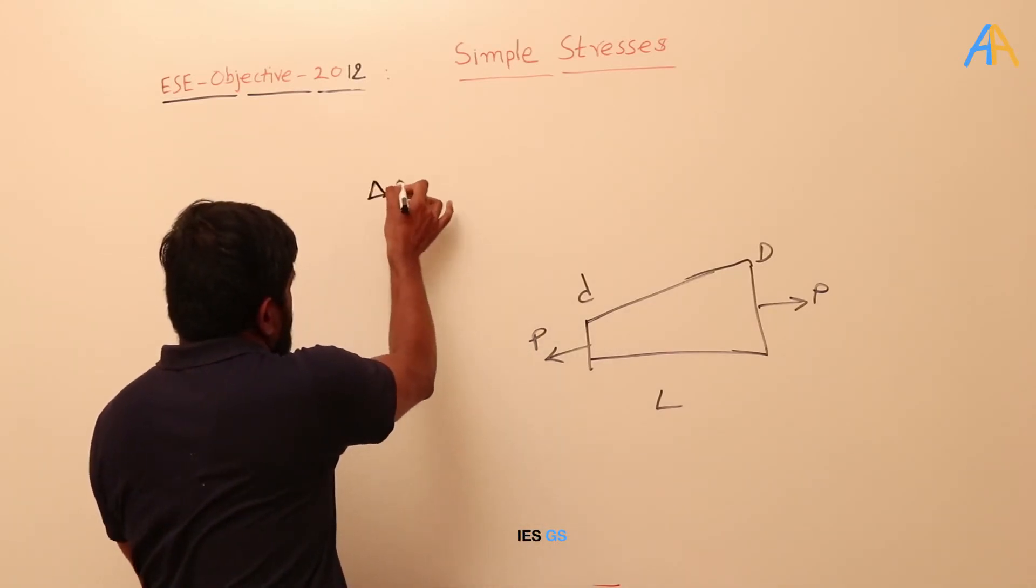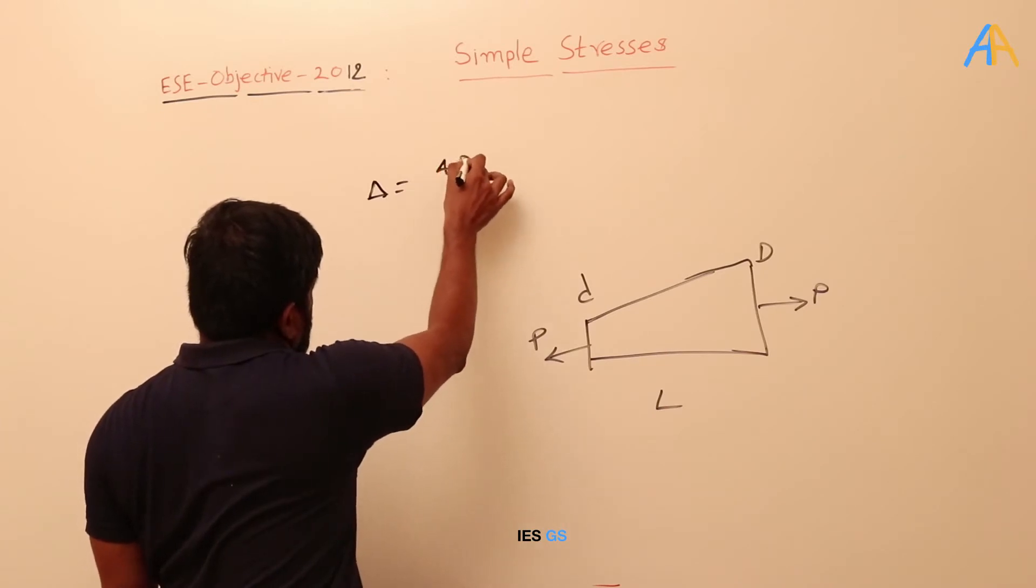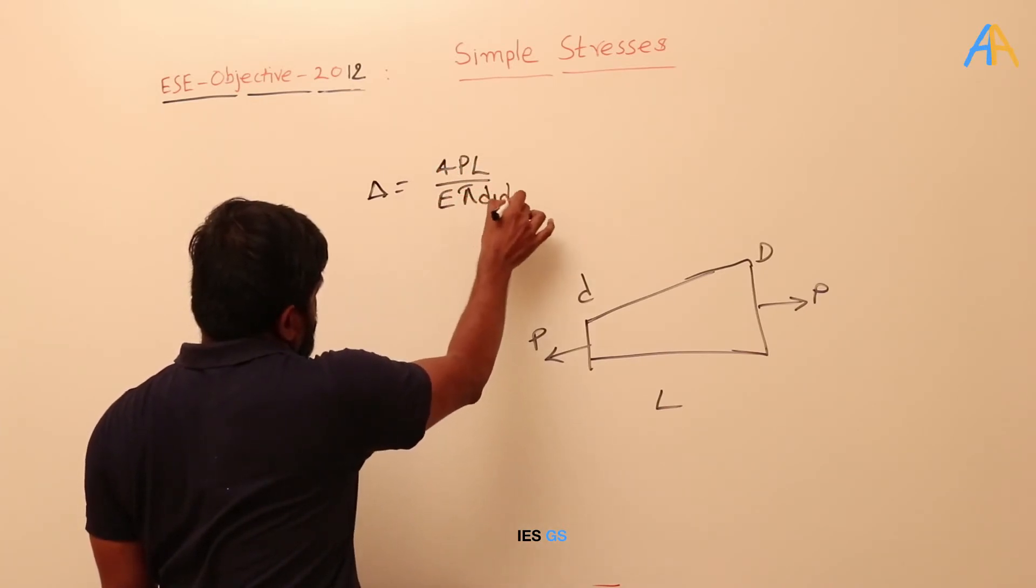What is the formula that we derived? The elongation equal to 4PL divided by E pi D1 D2.